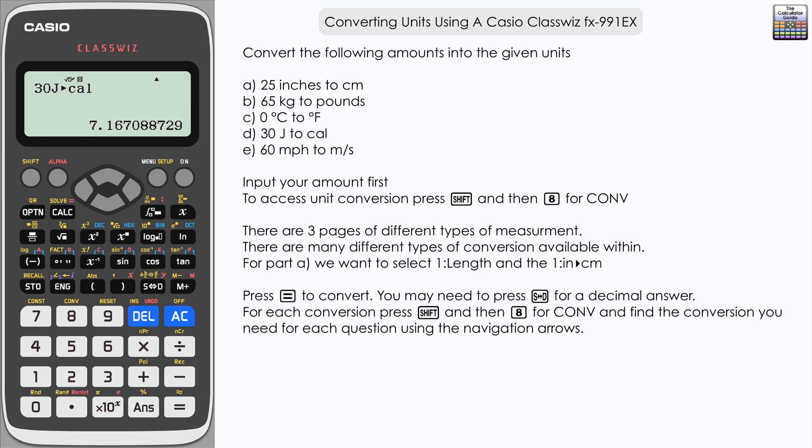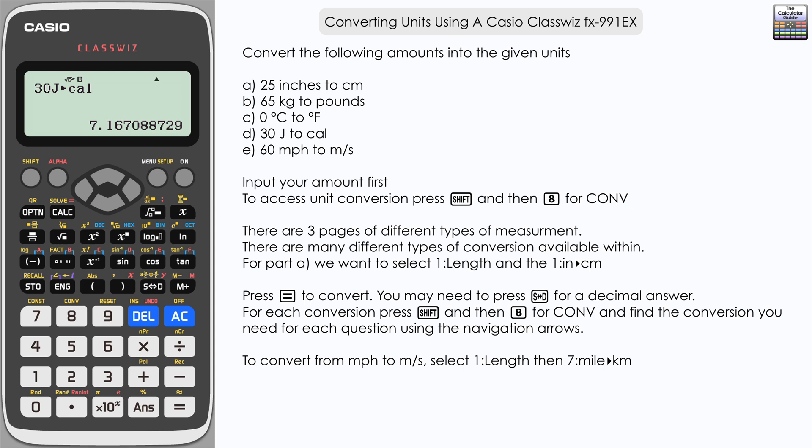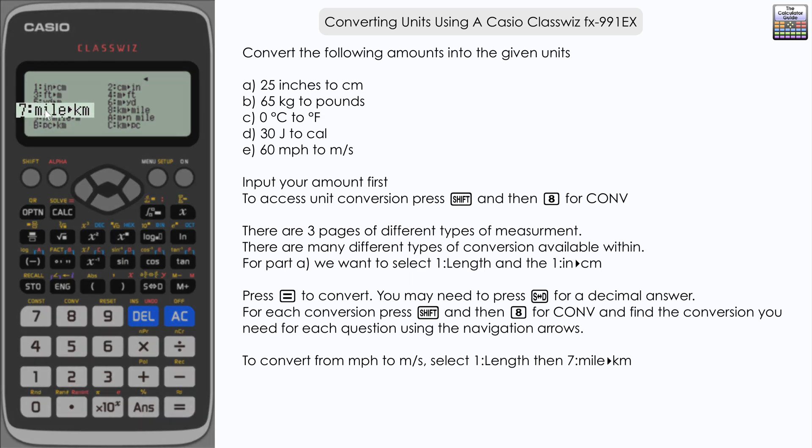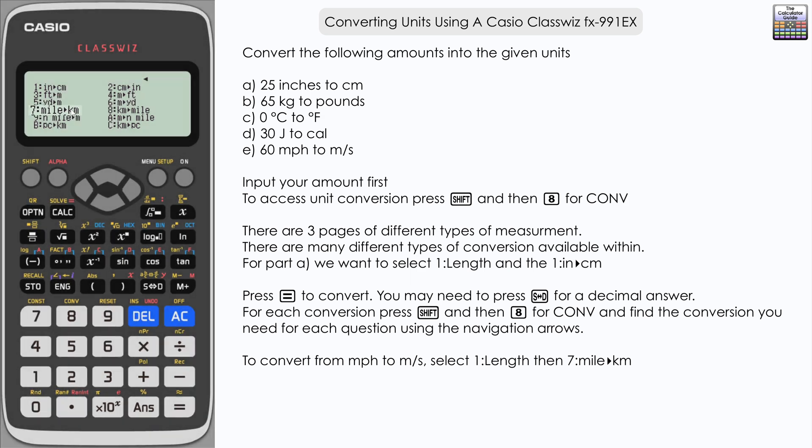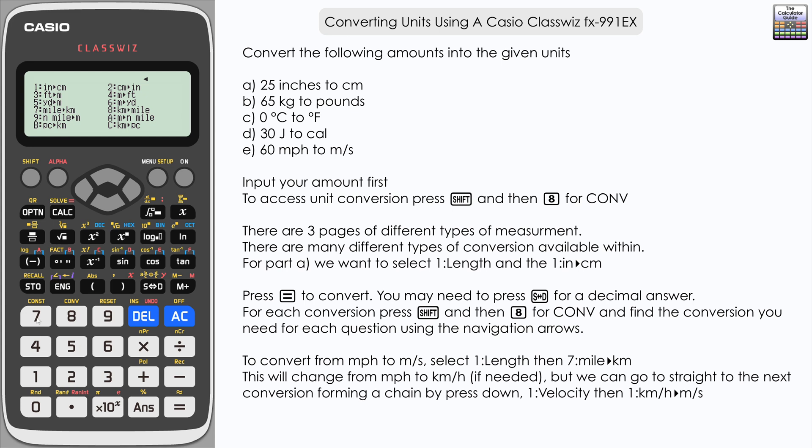Now the last one which is arguably the most useful, we're going to actually do a chain of two conversions in this one. We're going to start by inputting 60 for miles per hour. Now what we want to do is to actually use the length conversion here. So if you press one you can see that option seven is miles to kilometers. Now because we can change that and keep the same time unit, we can change that to kilometers per hour just by using this conversion. It'll only change the distance unit which is very useful. So we just press seven that will change our answer to kilometers per hour.